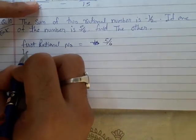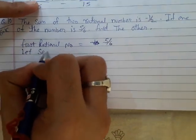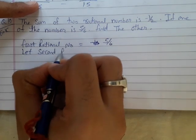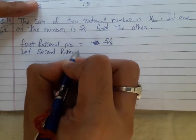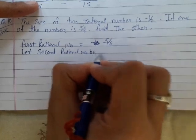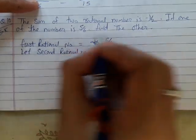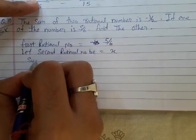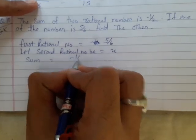Let second rational number be x, and sum of the rational numbers is given. Sum is equals to minus 1 upon 2.